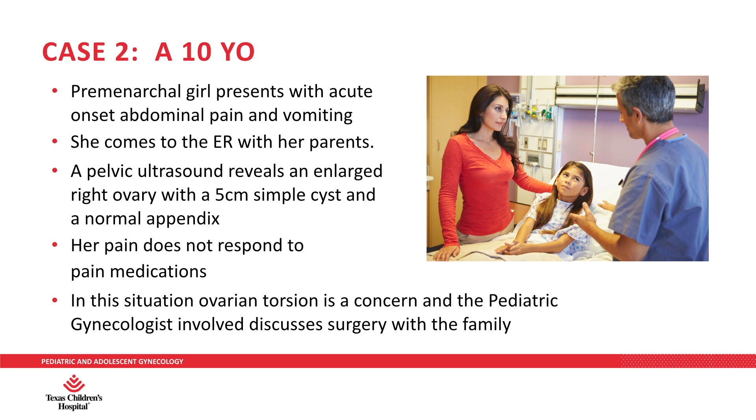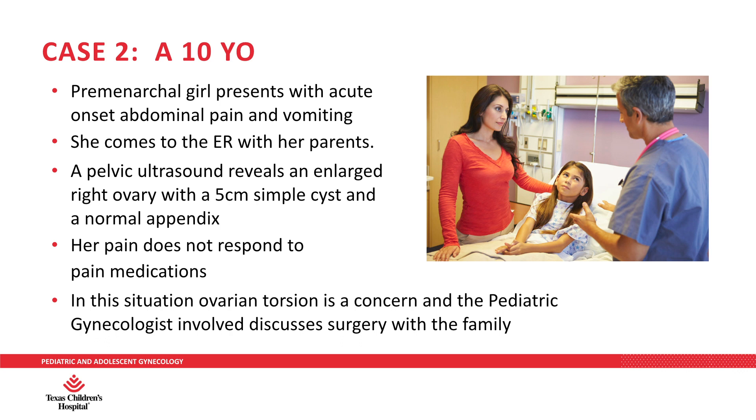In case two, a 10-year-old premenarchal girl presents with acute onset abdominal pain and vomiting. She comes to the ER and a pelvic ultrasound reveals an enlarged right ovary with a five-centimeter simple cyst and a normal appendix. Her pain does not respond to pain medications in the ER, so there is a very high suspicion for ovarian torsion, and the pediatric gynecologist discusses surgery with the family. I hope you've learned about ovarian cysts today, and if you have questions, please don't hesitate to contact our pediatric and adolescent gynecology group.